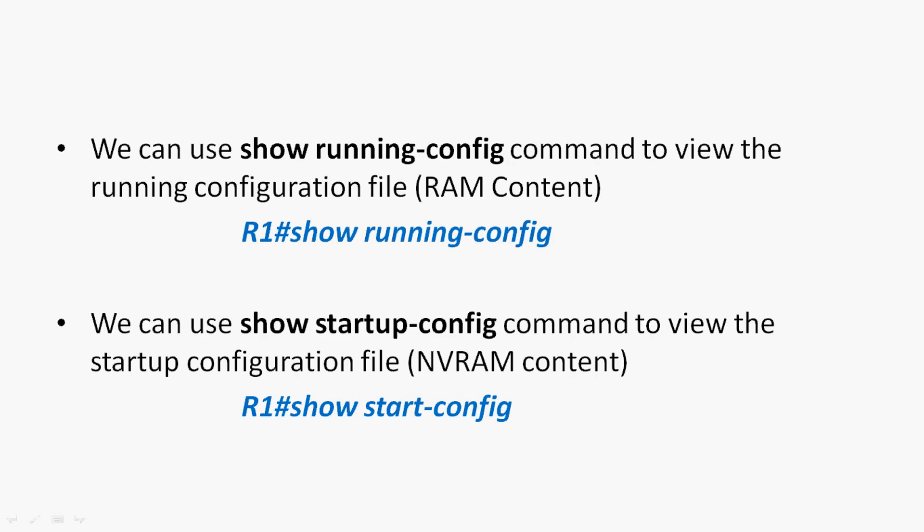We can use the 'show running-config' command to view the running configuration file, i.e. the RAM content. We have to go to privileged exec mode and give that command. Also we can use 'show startup-config' to view the startup configuration file, i.e. the NVRAM content, from the same privileged exec mode.